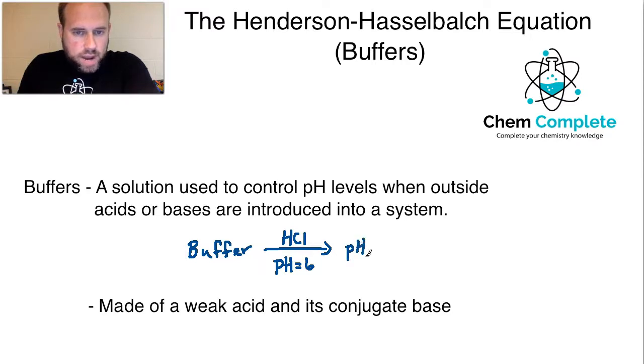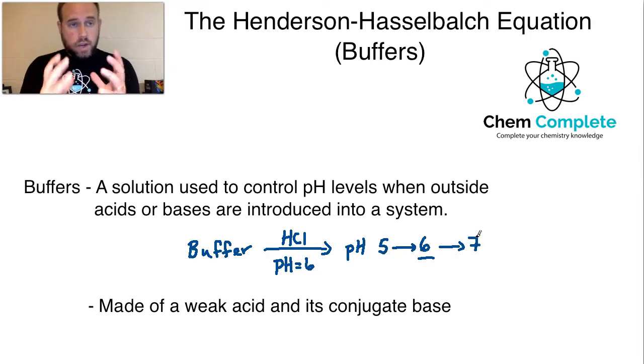If this comes and it hits the buffer system, instead of let's say the system had a pH of 6, and I add a minuscule amount of HCl, maybe a moderate amount, but certainly not an excess because buffers do have a capacity where they can get overwhelmed. But let's say that it's roughly at a pH of 6, I add some hydrochloric acid.